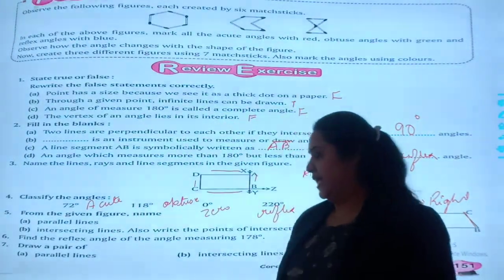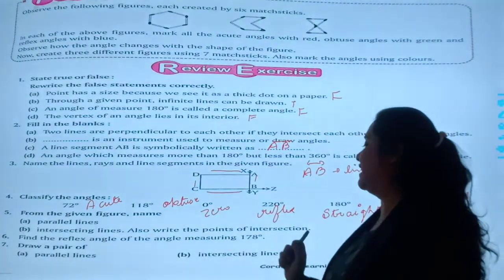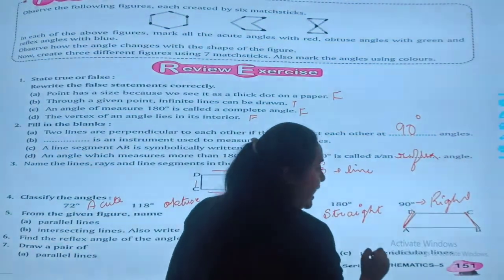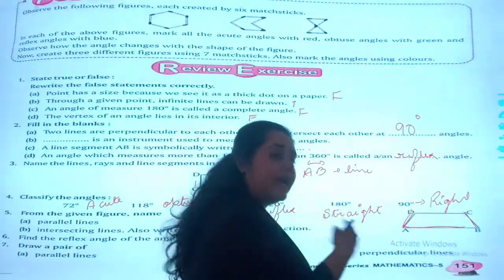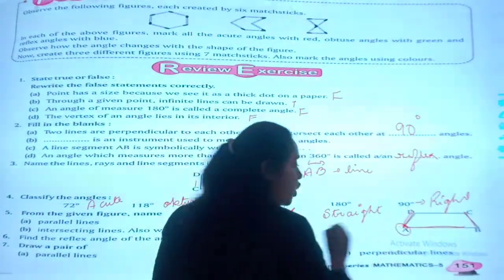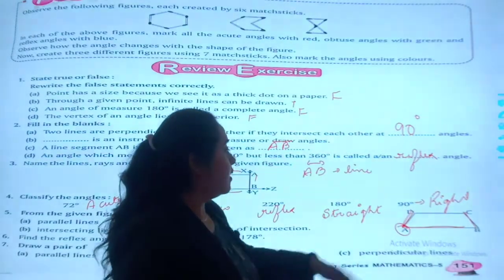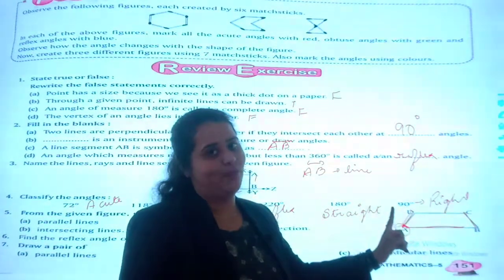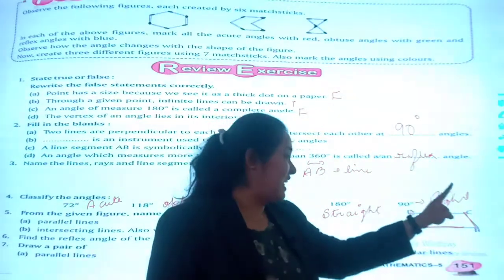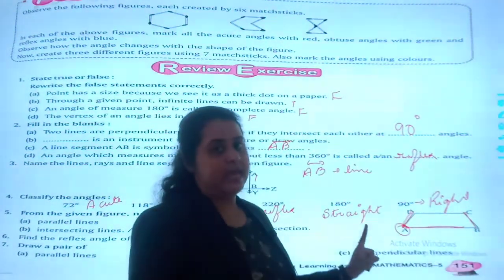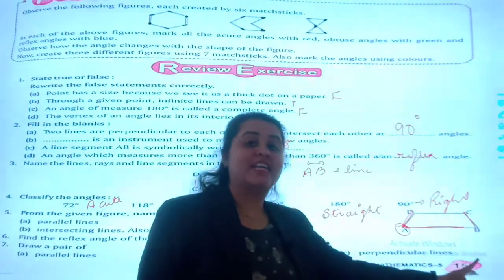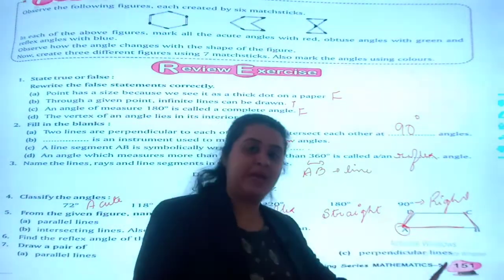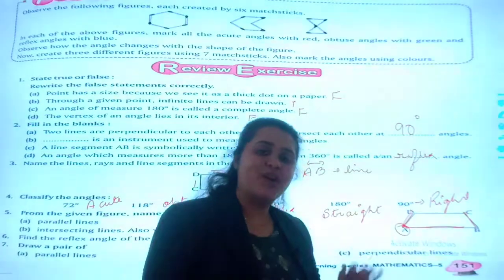Second, intersecting lines, also write the point of intersection. Intersecting lines means CB, A one line, and AB is another line. In that, A is common. The second one will be CD and BA. B will be common or I can say intersecting lines. The third pair will be CB and BA. B will be common point, I can say intersecting point. The last pair will be BC and CB. C will be the intersecting point. Understood?